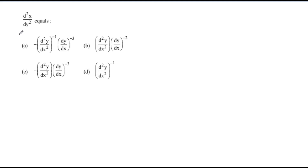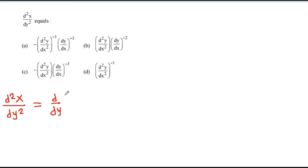In this video we have to find the value of d squared x by dy squared from the four options given. This is an easy problem if your basic concept of differentiation is clear. Here we have to find the value of d squared x by dy squared, and we know that d squared x by dy squared is equal to d by dy of dx by dy. In each option we have dx in the bottom and dy in the bottom.